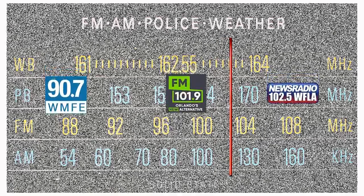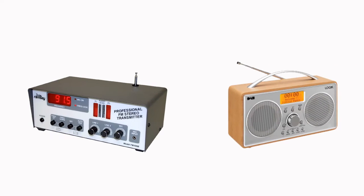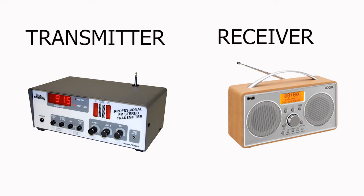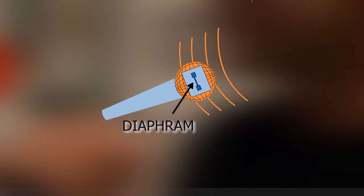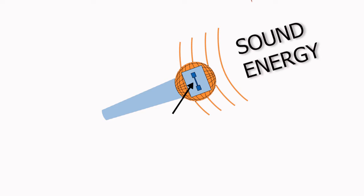But what does this number mean and how is it used to transmit music and information over the airwaves? In order to listen to the radio, there are two key components needed: a transmitter and a receiver. As the radio announcer speaks into the microphone, a diaphragm inside the microphone vibrates. A transducer inside the microphone recognizes the vibrations and converts the sound energy into a low-powered electrical current.